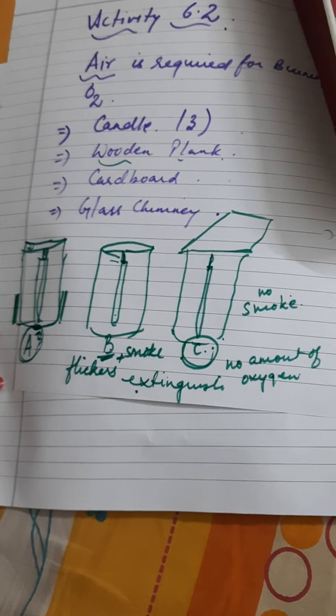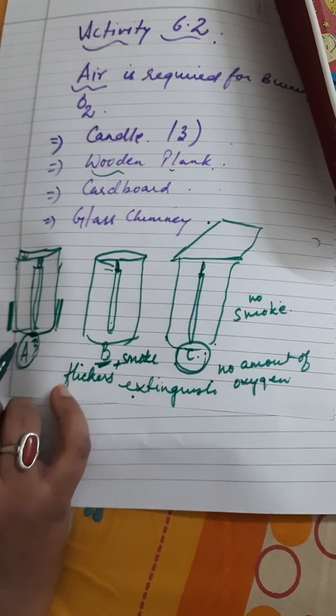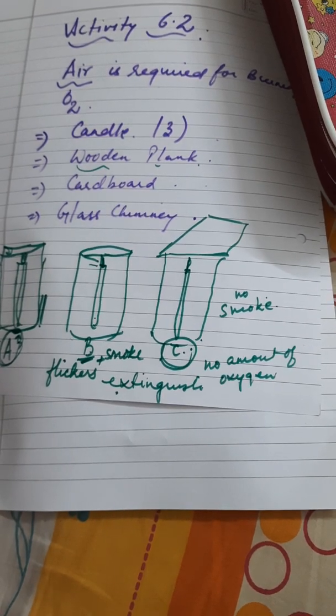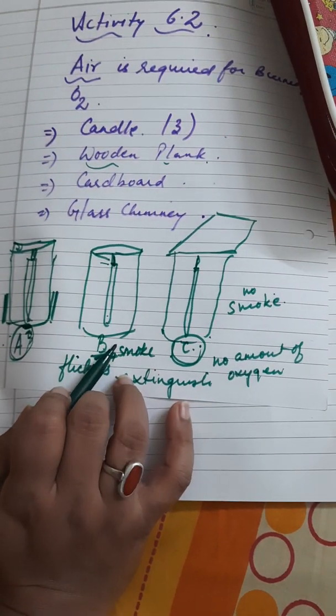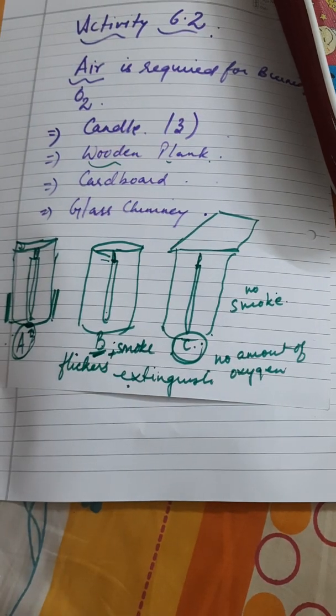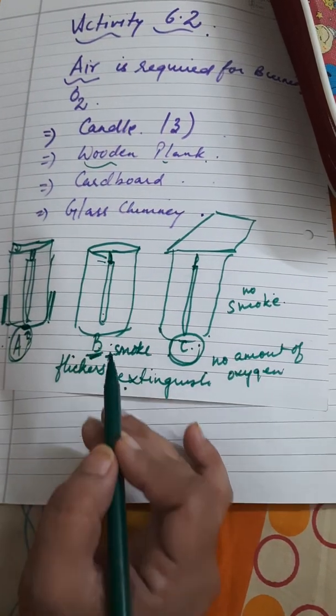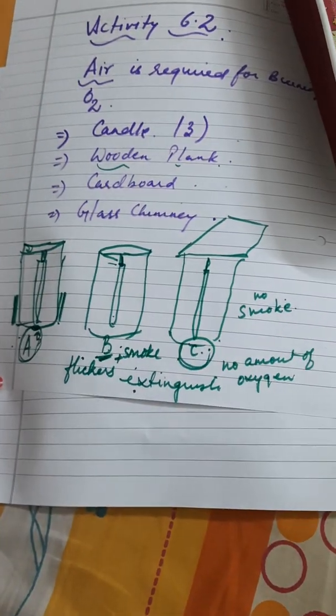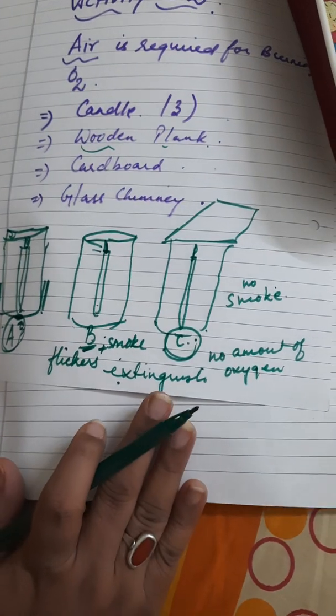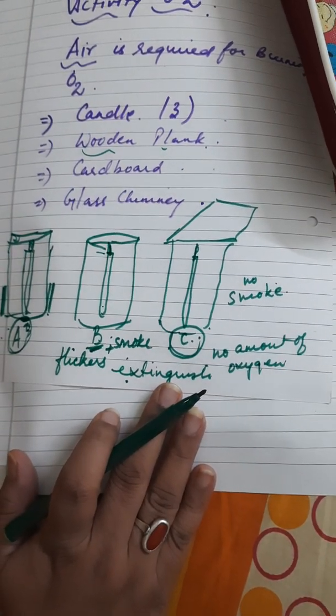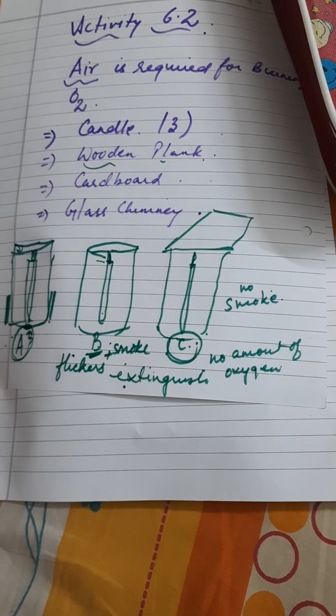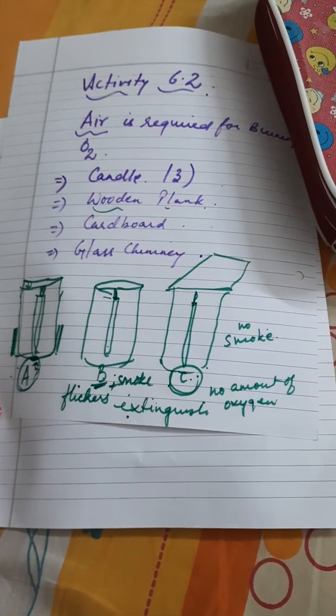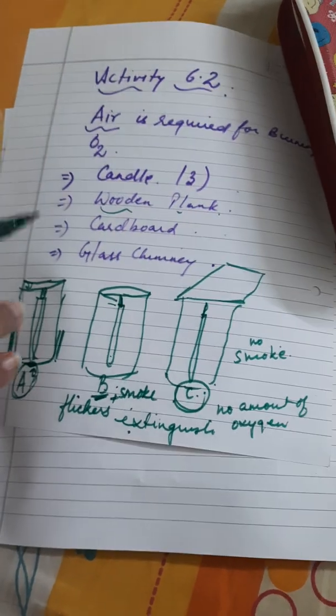Finally, the conclusion is that candle A goes for complete combustion because air is required for burning. Candle B goes for incomplete combustion which is released by smoke, that is carbon monoxide. And the last one, there is no combustion because no presence of air. Henceforth, we come to an end that air is required for burning and that is shown by this activity 6.2.